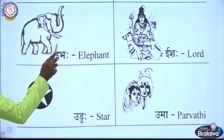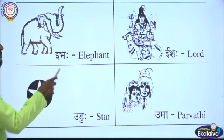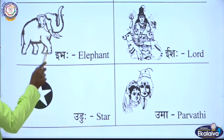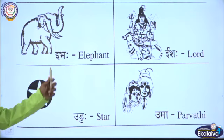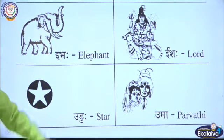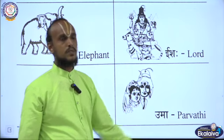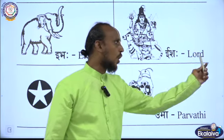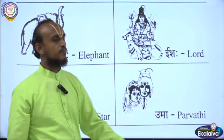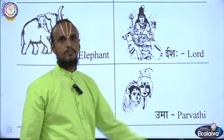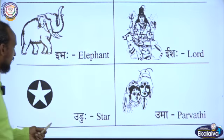Ebha, Ebha — elephant. Eshah, Eshah — lord. Listen here.